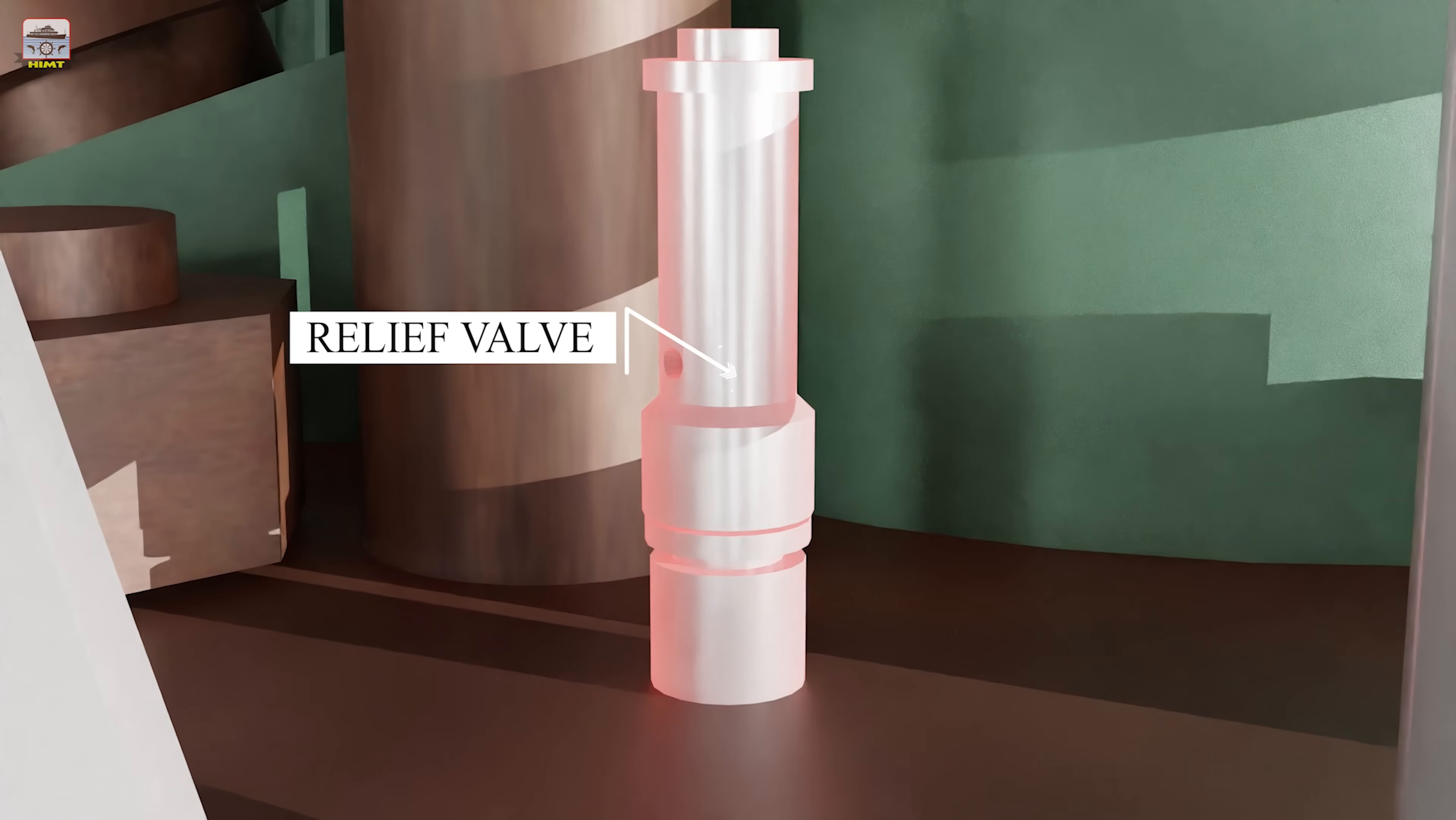The relief valve fitted on the cylinder head opens and releases the abnormally high pressure generated inside the combustion chamber in a fault condition.